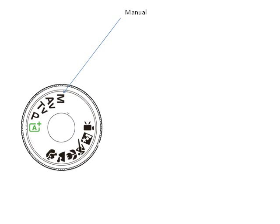Let's take a look at the manual setting, which is really self-explanatory. The camera will be set into manual and you will have to set the aperture, your ISO, and your shutter. If you're not clear on what these do at the moment, go to the next modules and you will find in great detail an understanding of your aperture, ISO, and shutter.